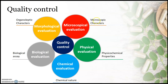Microscopical evaluation also includes the type of stomata and type of trichomes. In physical evaluation, physical and chemical properties such as ash values, extractive values, loss on drying, foreign organic matter, solubility, and refractive index are studied. In chemical evaluation, the chemical nature is identified using preliminary phytochemical screening and other modern chemical techniques. In biological evaluation, the therapeutic efficacy of the crude drug is confirmed using in vitro or in vivo biological assays.